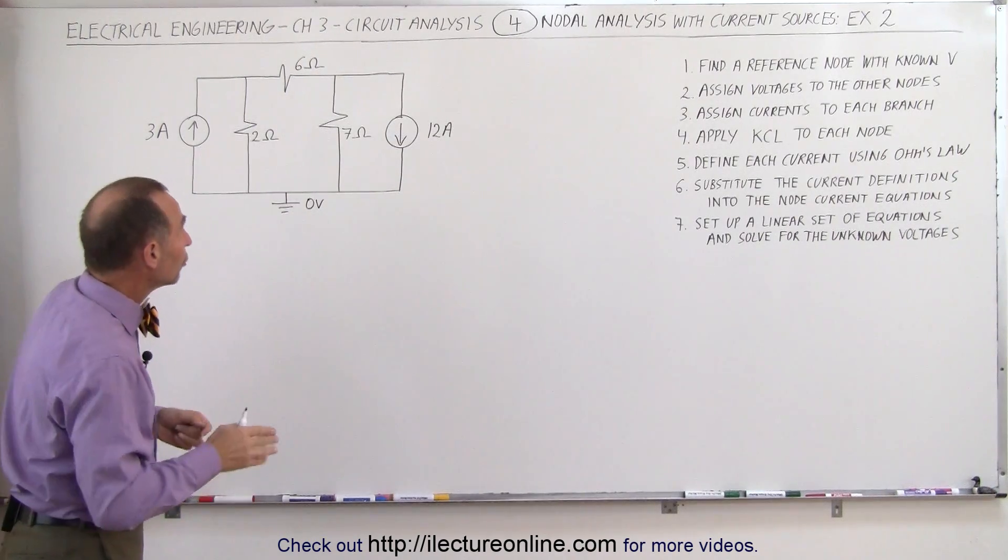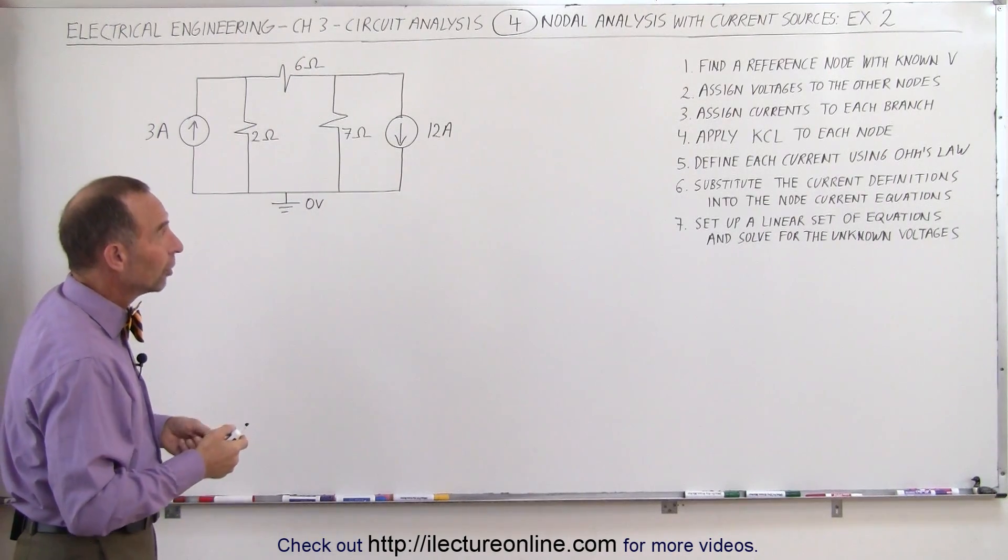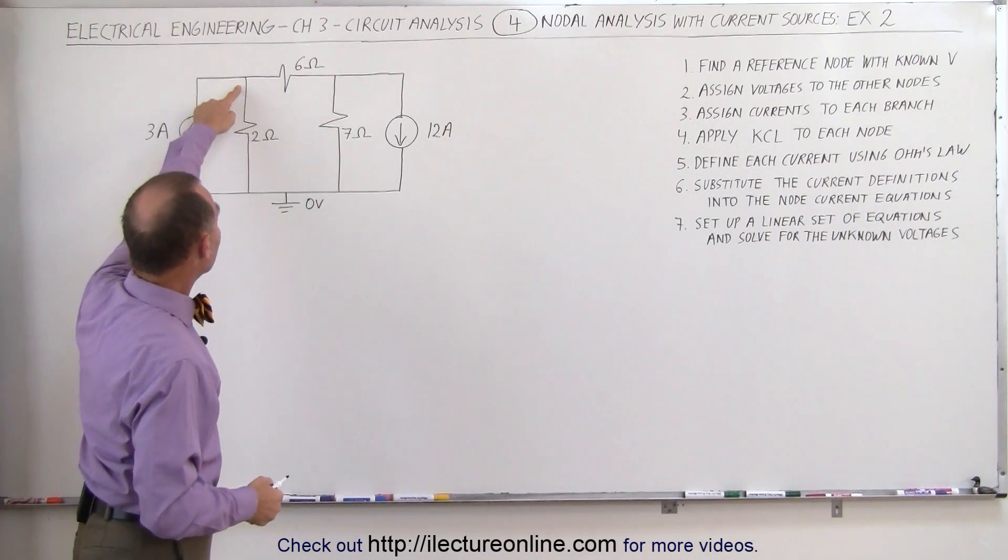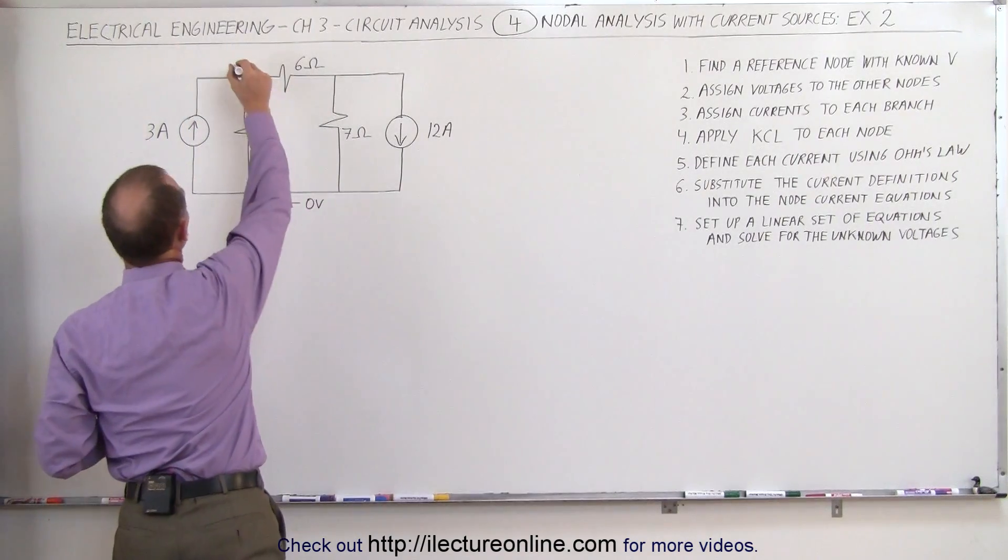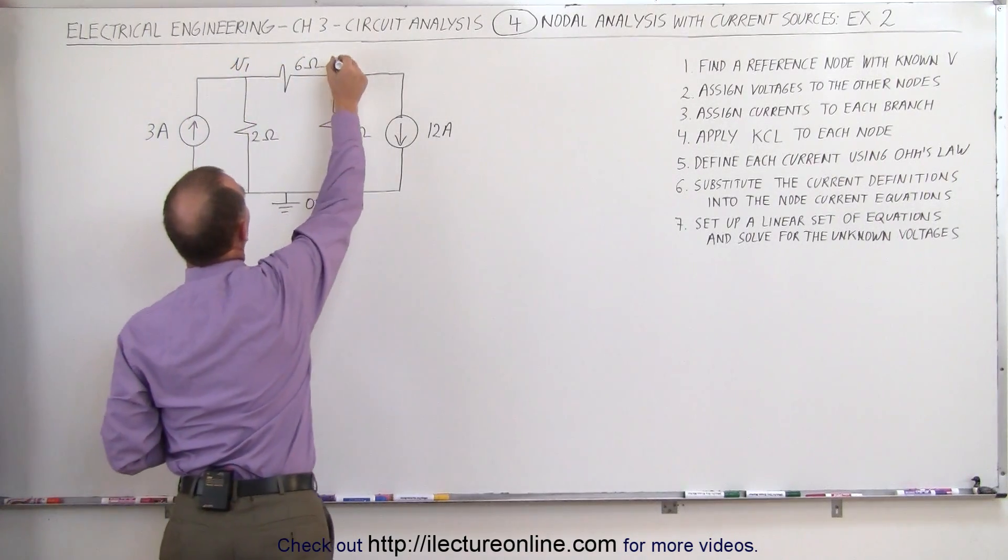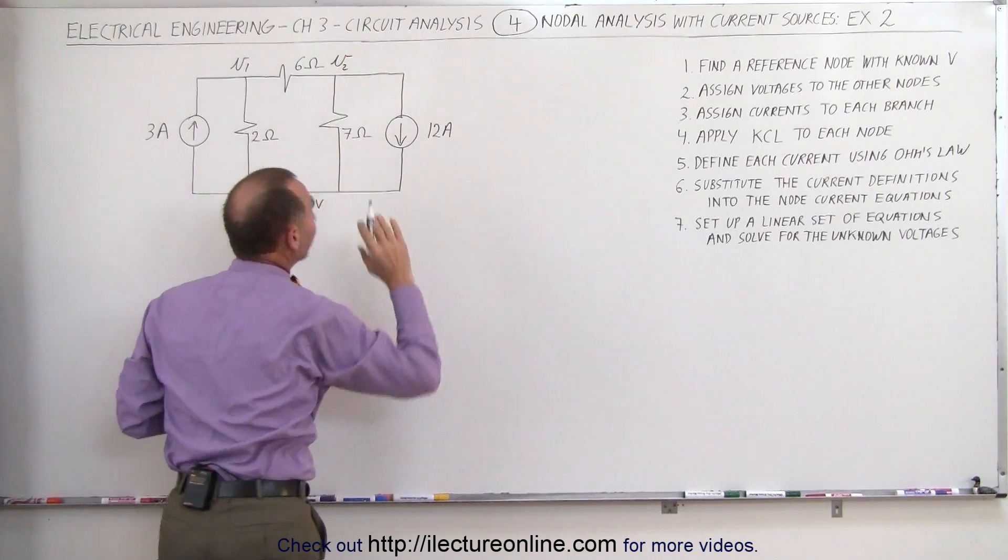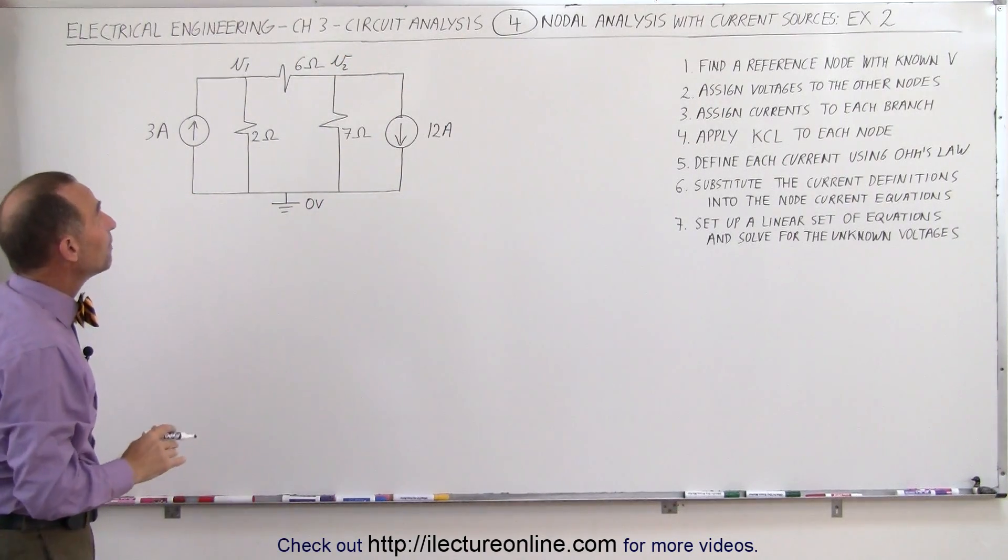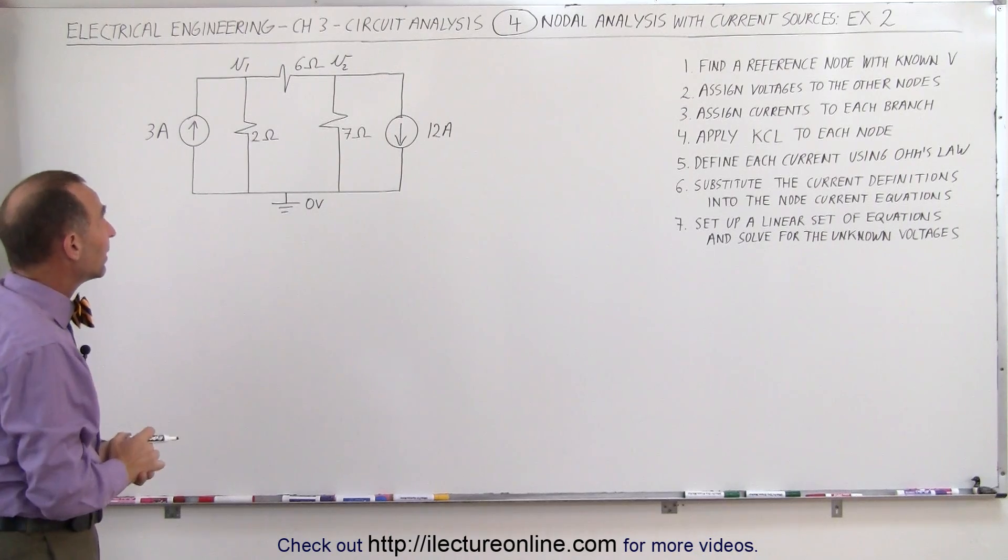The next step is to assign the other nodes with a voltage. We have a node here and a node there, so let's call that v1 for that node and v2 for that node. We don't know what v1 and v2 is, and that's what we're trying to find here.